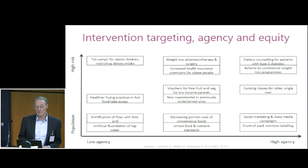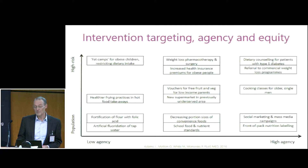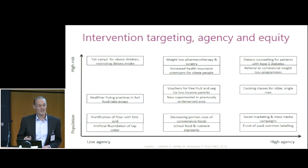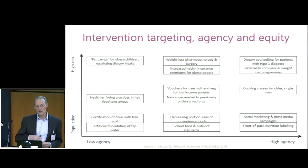Conversely, on the left-hand side, if we take something like putting folic acid in flour to prevent neural tube defects, as you have in the US — and I think we're going to have in the UK sometime soon — if you do that, nobody has to change anything. You just carry on eating flour. Nothing changes. So it doesn't make the same demands on the individual.